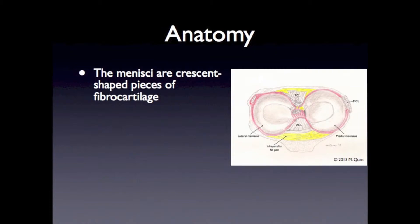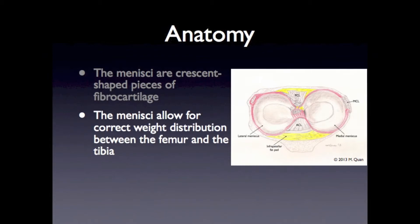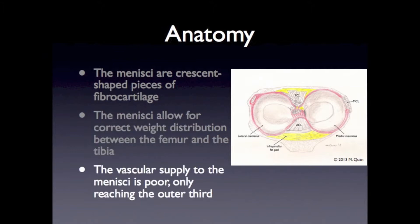The menisci are crescent-shaped pieces of fiber cartilage. They are made from type 1 collagen, in comparison to the type 2 hyaline cartilage that makes up the articular cartilage. The menisci allow for correct weight distribution between the femur and the tibia, reducing contact stresses from a round femur articulating with a flat tibia. The vascular supply to the menisci is poor, only reaching the outer third.